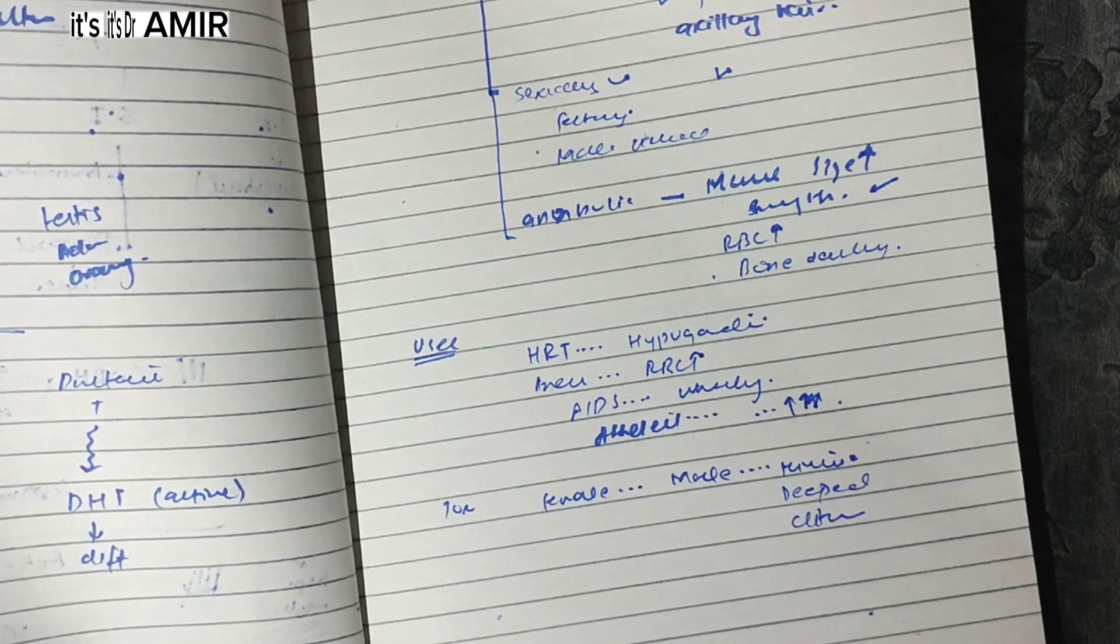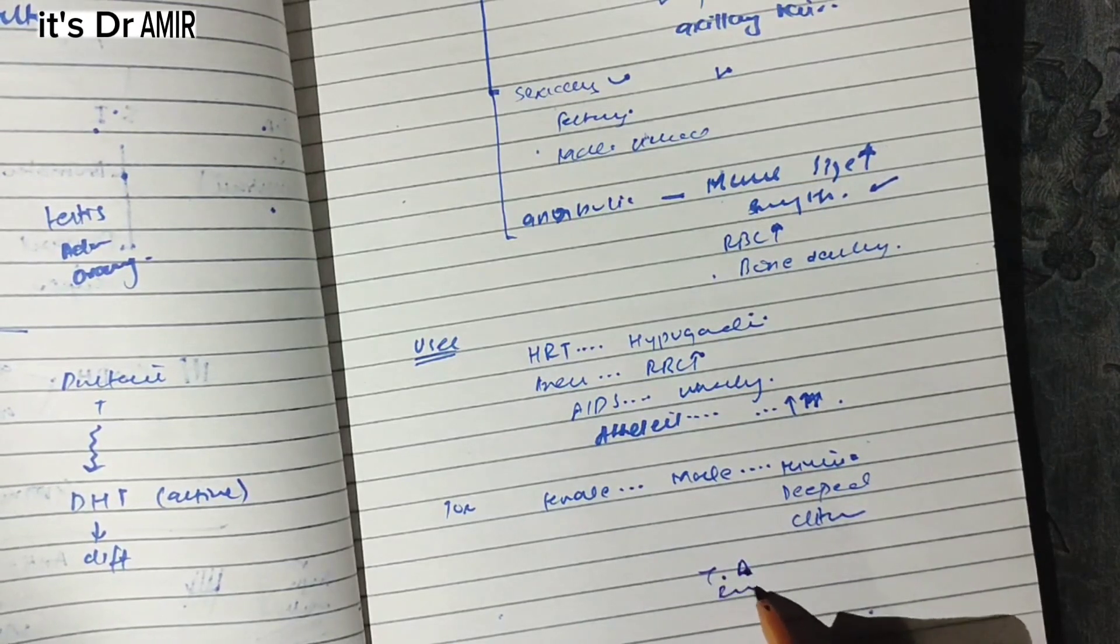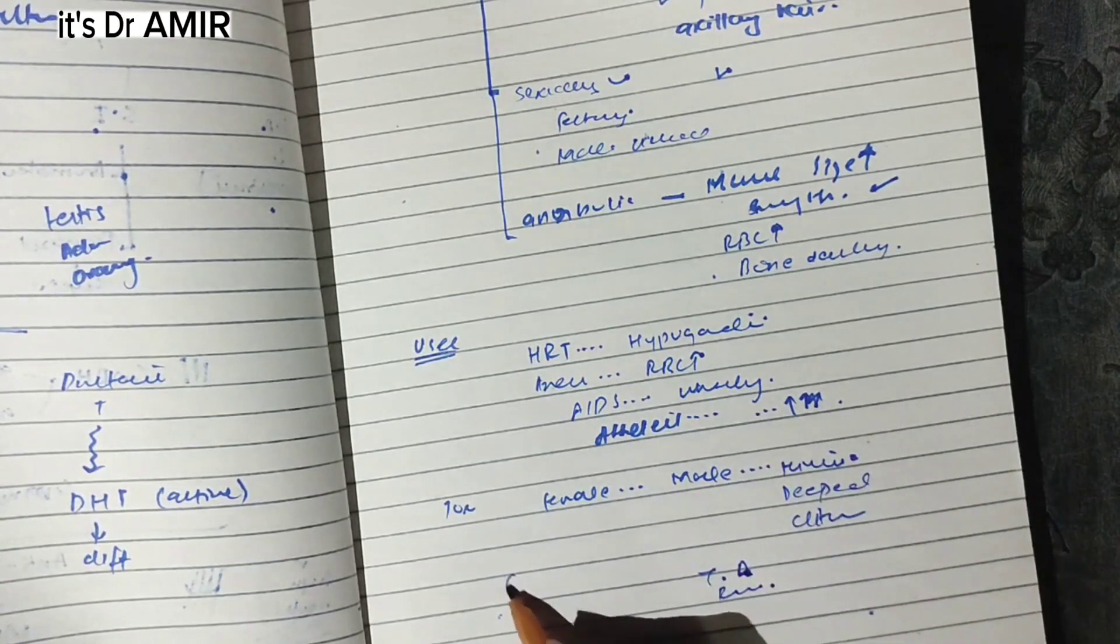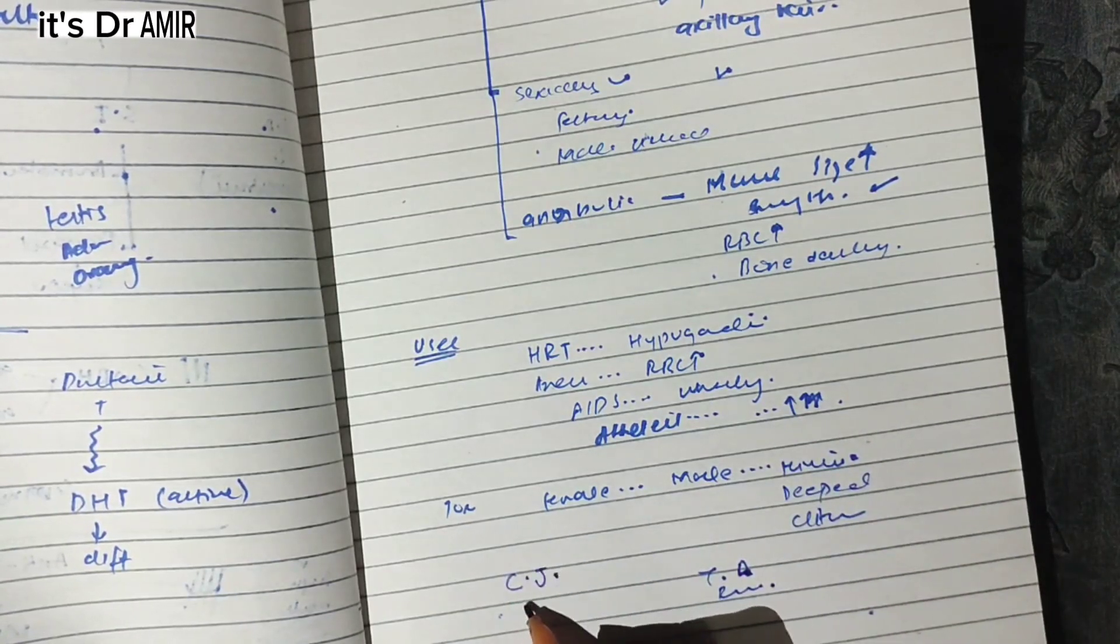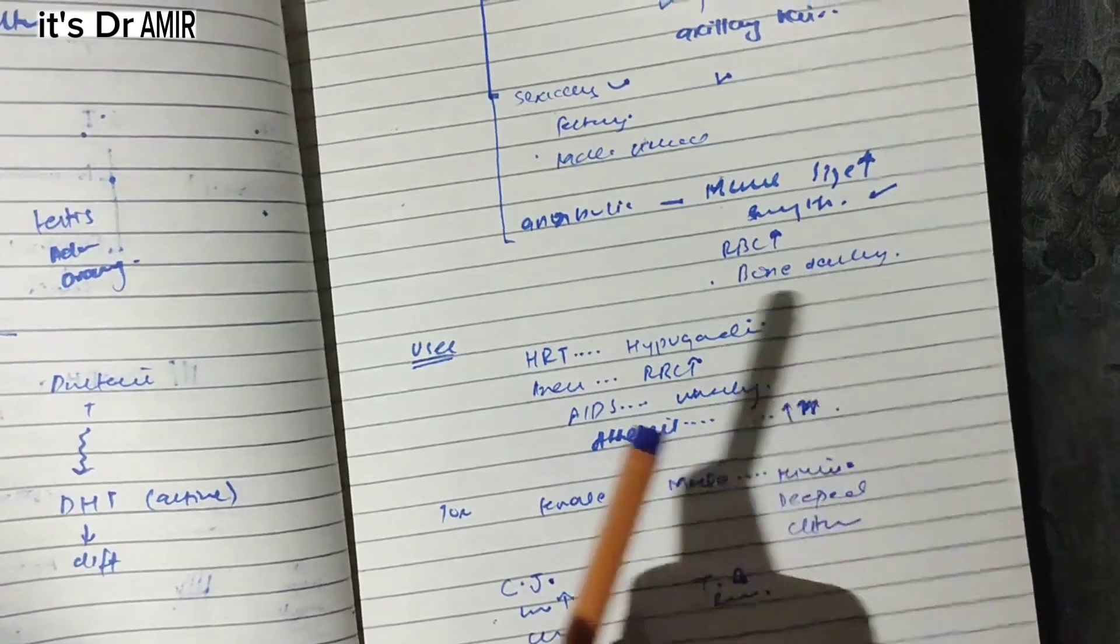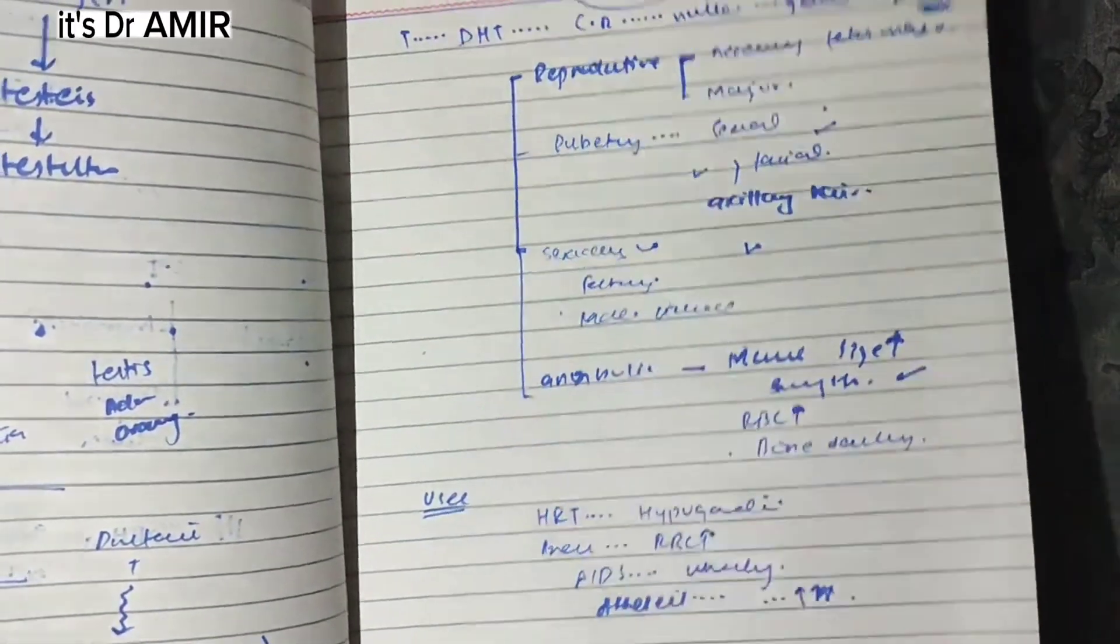If testosterone is given in excess to males, it is not good. Excess testosterone in males causes testicular atrophy or shrinkage and starts infertility. So we have normal work, uses, and adverse effects.